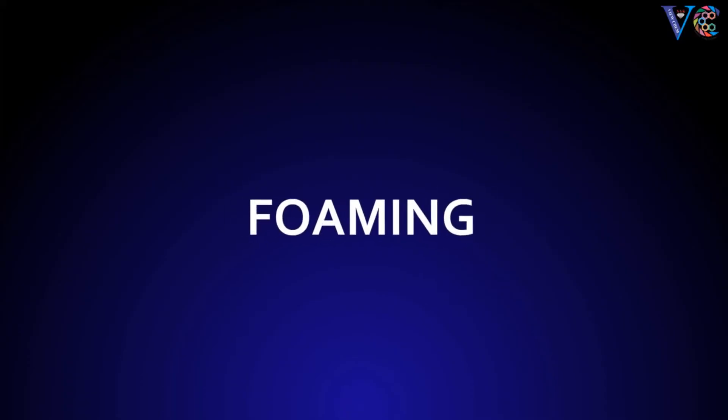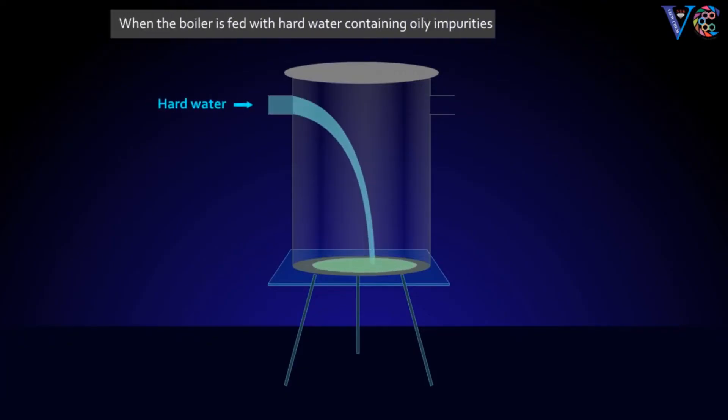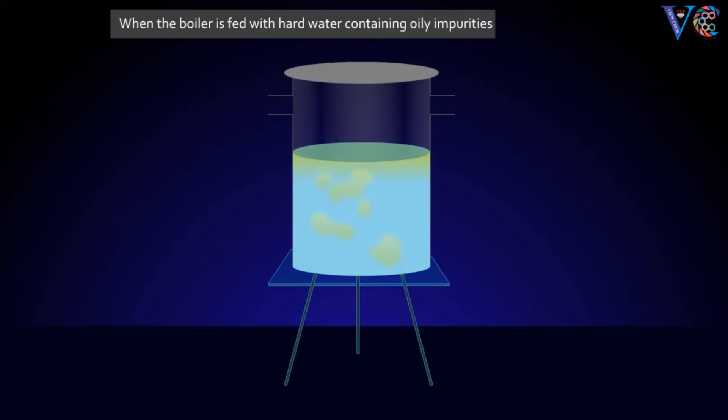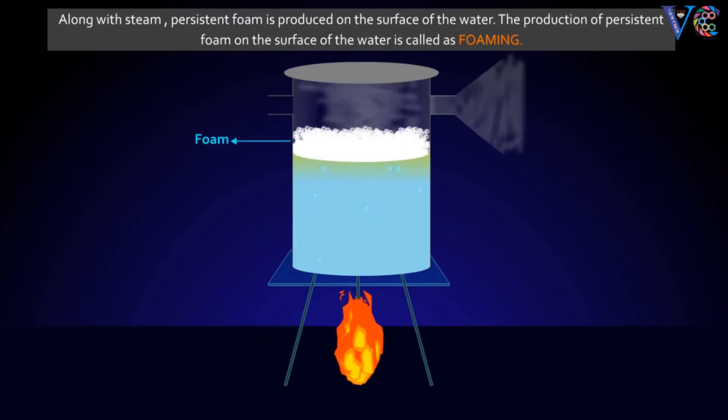Foaming. When the boiler is fed with hard water containing oily impurities and heated to boil, along with steam, persistent foam is produced on the surface of the water. The production of persistent foam on the surface of the water is called foaming.